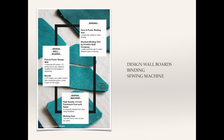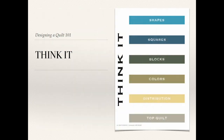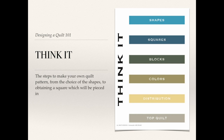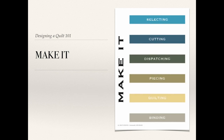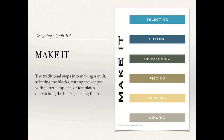The steps to make your own quilt pattern go from the choice of shapes to obtaining a square which will be pieced into blocks, learning how to choose the colors, and setting the blocks into a top to make a personal quilt — that's the thinking part. The making part involves the traditional steps: selecting the blocks, cutting the shapes with paper or acrylic templates, dispatching the blocks, piecing them, quilting the top, and finishing the project with the binding.